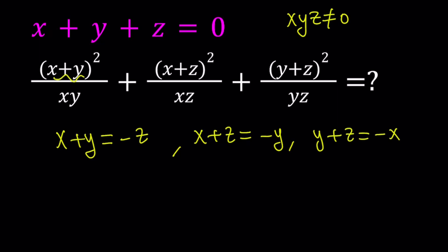And then we can just go ahead and substitute. But you're going to square, for example, if you replace x plus y with negative z, you're going to square negative z, which is going to give you z squared. So instead of negative z in parentheses squared, allow me to write just z squared. So this becomes z squared over xy, plus y squared over xz, plus x squared over yz. So this is what we're trying to evaluate.